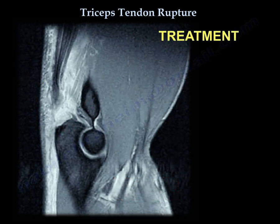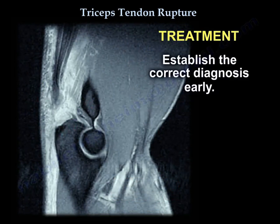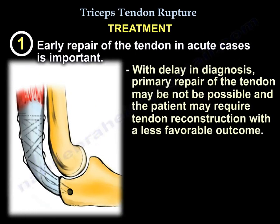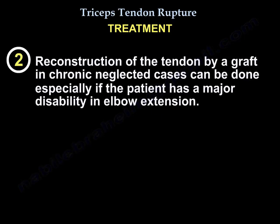Treatment of triceps tendon rupture: establish the correct diagnosis early. Early repair of the tendon in acute cases is important. With delay in diagnosis, primary repair may not be possible, and the patient may require tendon reconstruction with a less favorable outcome. Reconstruction of the tendon by a graft in chronic neglected cases can be done, especially if the patient has a major disability in elbow extension.